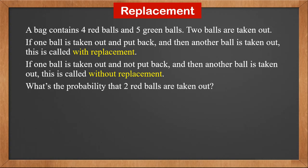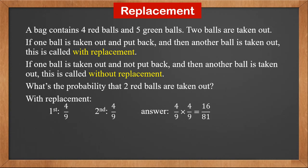What's the probability that two red balls are taken out? Let's look at how to solve this problem under with and without replacement. If it's with replacement — the ball is put back — then for the first ball, the probability of red is four over nine, because there are four red balls. And the probability that the second ball is red is also four over nine, because the first ball is put back.